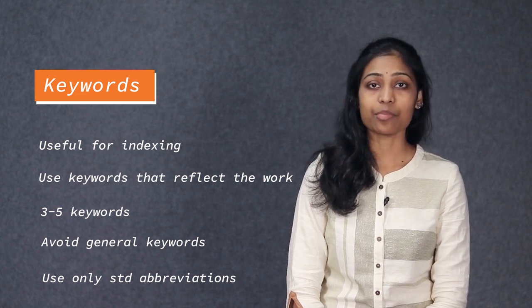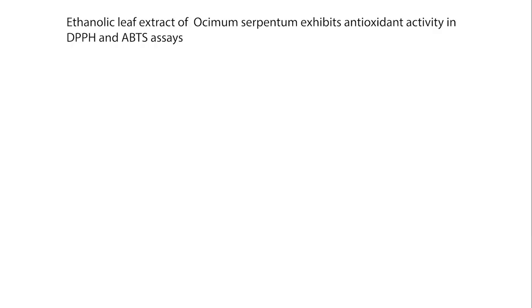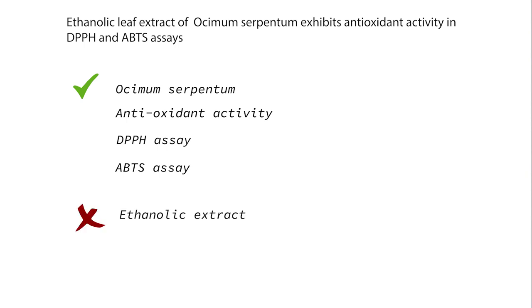Here is an example of choosing the keywords for the title we have used earlier: Ethanolic leaf extract of osimum serpentum exhibits antioxidant activity in DPPH and ABTS assays. For this, keywords like osimum serpentum, antioxidant activity, DPPH assay, ABTS assay are good ones. But keywords like ethanolic extract, herbal product, natural product, etc. are inappropriate.